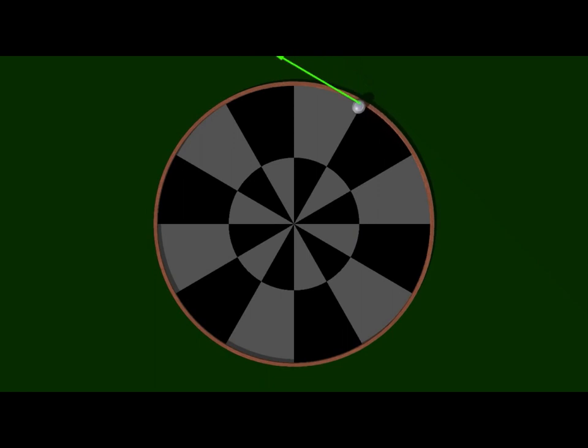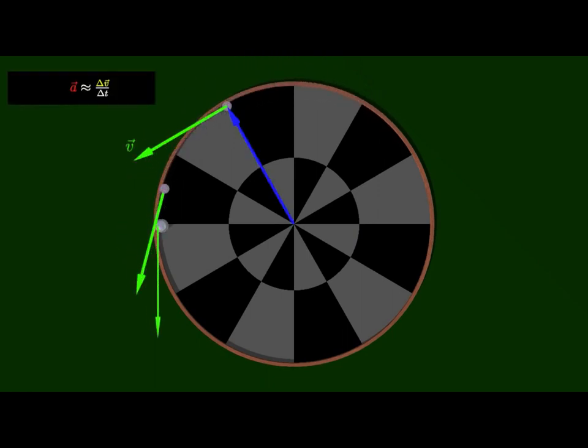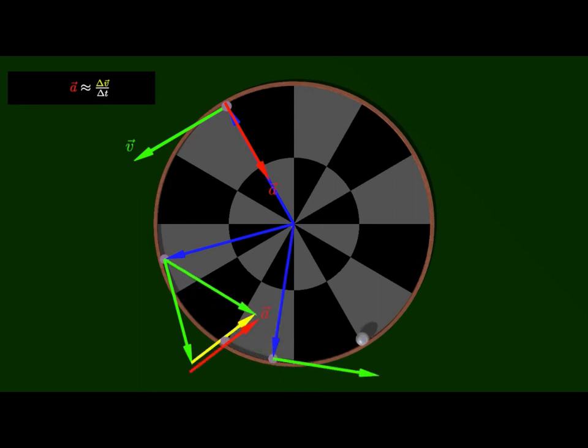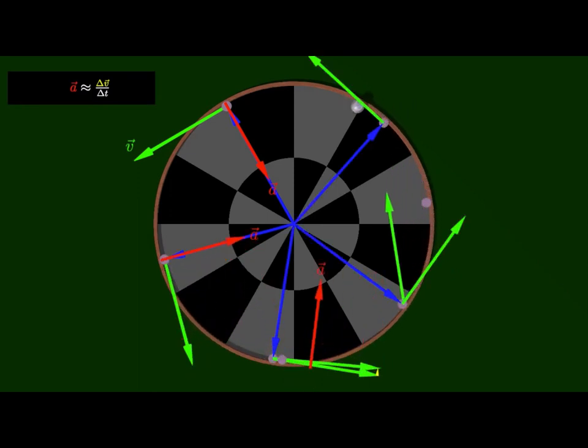The acceleration of the object is the rate of change of velocity with respect to time. The acceleration of the object can be estimated by looking at the change in velocity over a short interval of time. The instantaneous acceleration is then the limit of this estimate as the length of the short time interval goes to zero. Note that the direction of the acceleration vector is always towards the center of the circle.